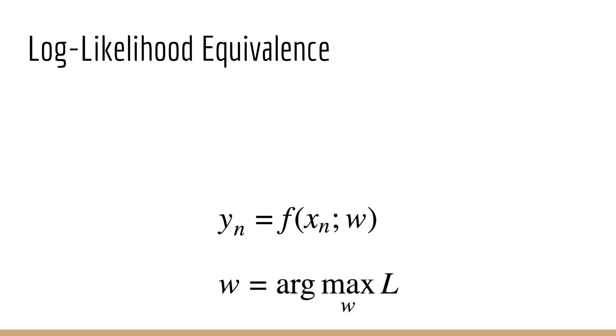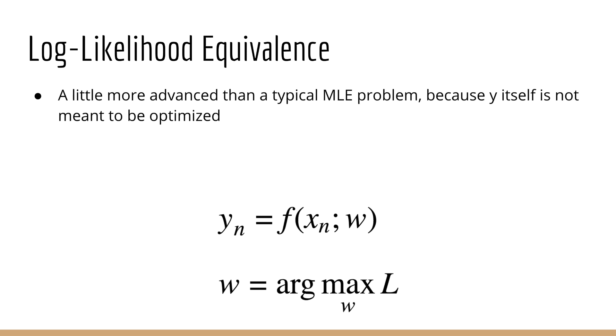It's important to remember that this is a little more advanced than a typical maximum likelihood estimation problem, because y is not meant to be optimized itself, it's just the model prediction. What we actually want to maximize with respect to is the model weights. So we can think of y of n as a function of some set of weights w. And this w is actually what we want to find. In other words, w is the argmax of L.